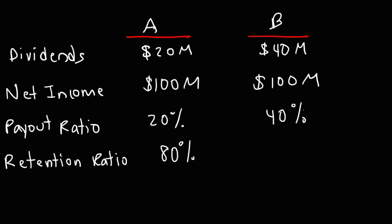Now, for company B, the payout ratio is 40%. 100% minus 40% gives us a retention ratio of 60%. And that's how you calculate the payout ratio and the retention ratio.